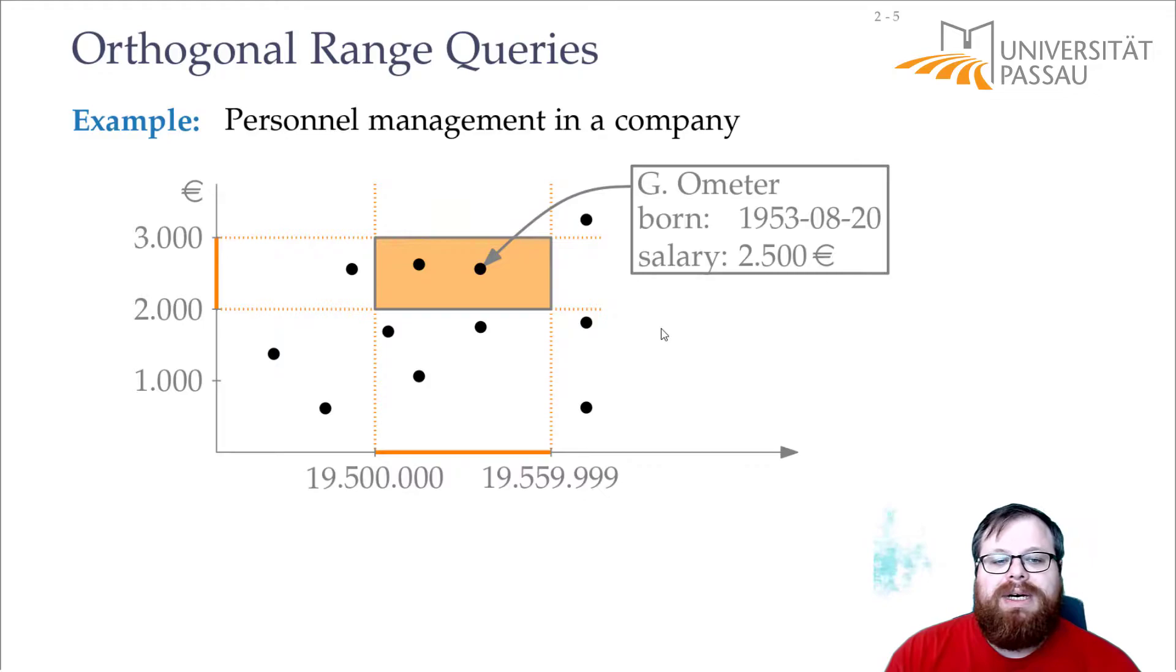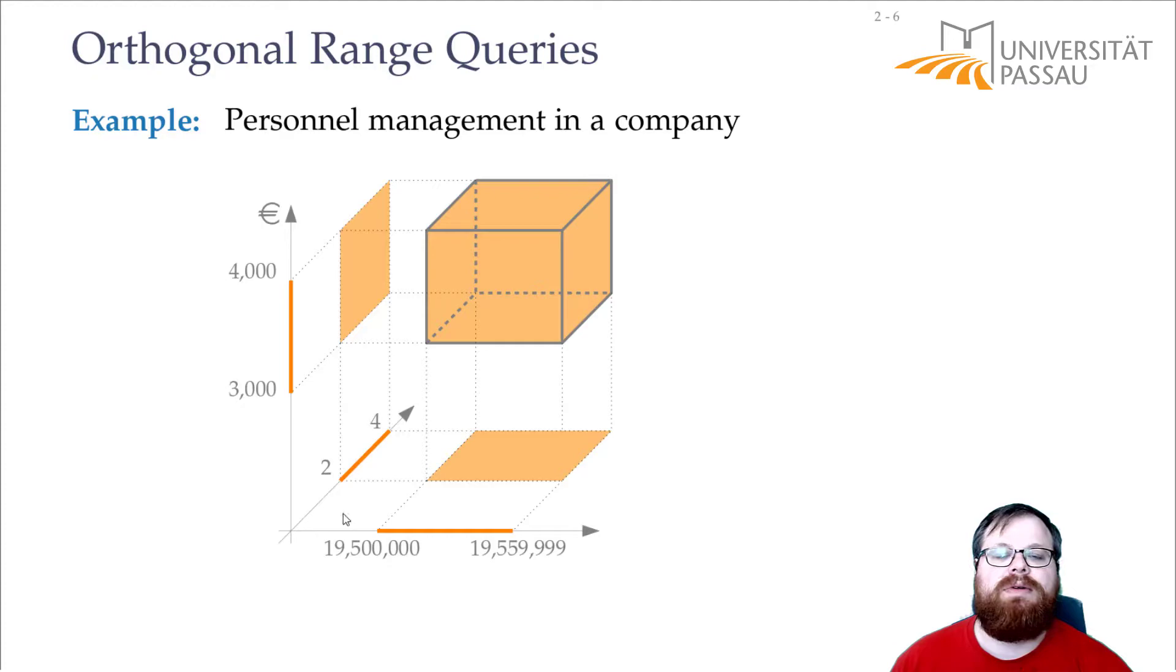Of course, in general you might have even more properties than two. You might also want to store how many years have they been working in the company. And then you want to extend the query and you only want to find people who have been working there for between two and four years.